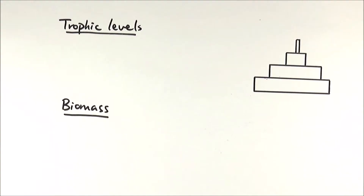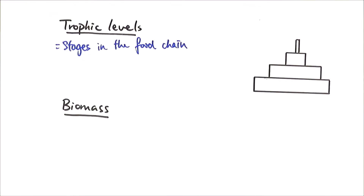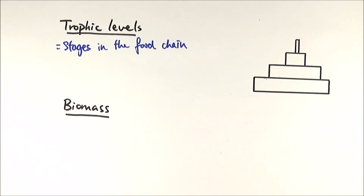In this video we'll be looking at biomass transfer through an ecosystem. There are different terms you need to be aware of, but hopefully you're quite familiar with them as you may have covered some of them at GCSE. Let's start with trophic levels — these refer to the stages in a food chain, which refers to the transfer of food or energy through an ecosystem.